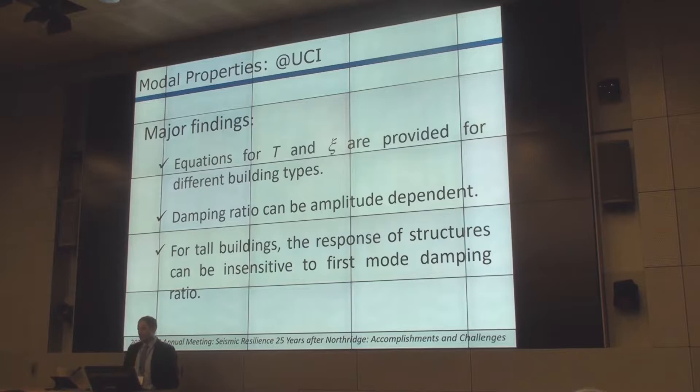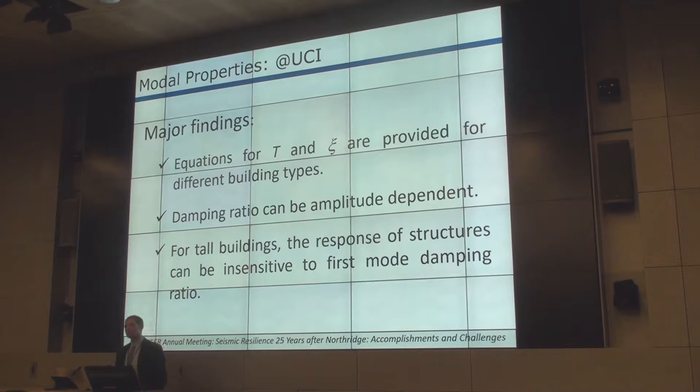So altogether, this concludes the first part of our work at UCI on damping and period. We have equations for T and ζ. Some of our equations show that damping is amplitude dependent, especially for reinforced concrete buildings, but not amplitude dependent for steel buildings. And for tall buildings, first-mode damping shouldn't be your major point of argument as it was a few years back.